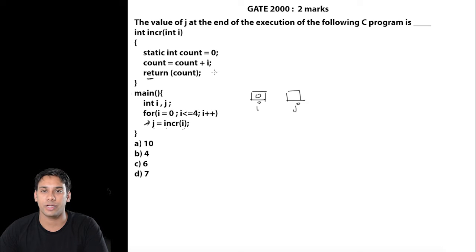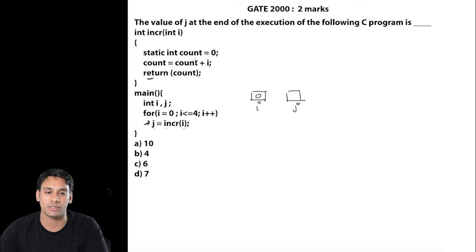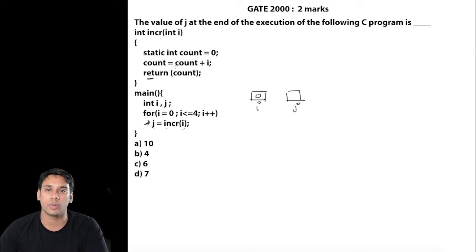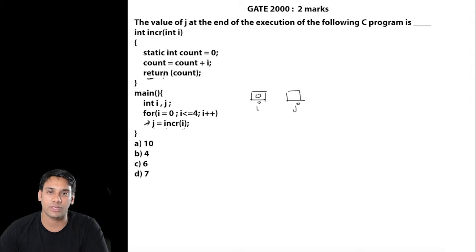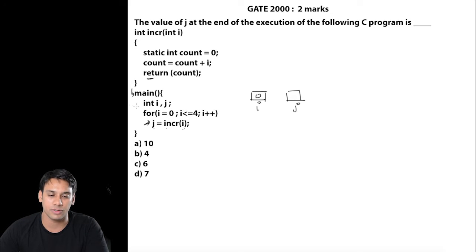Now let us try this program. This program was asked in GATE 2000 and it was a 2-mark question, which is a very simple question based on static variables. If you know what static variables are, you can easily solve these questions. Now let us try to execute this program — execution will start from the main function.